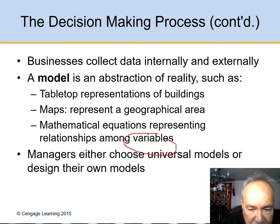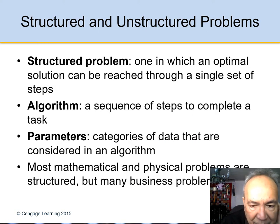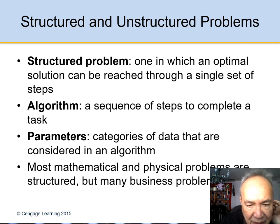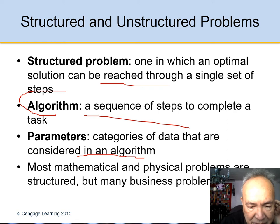Managers either choose universal models or design their own. There are two kinds of problems. Structured problems are those for which an optimal solution can be reached through a single set of steps. Algorithms are the steps to complete the task, and parameters are the categories of data considered in the algorithm. Most mathematical and physical problems are structured, but many business problems are not.